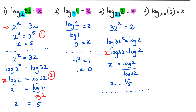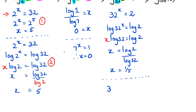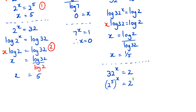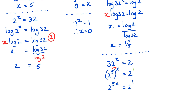Here's how to get 1/5 the other way. We have 32^x = 2. Rewrite 32 as 2^5, so (2^5)^x = 2. The right-hand side has 2 to the power of 1. Multiplying the exponents on the left gives 2^(5x) = 2^1. The bases cancel, so 5x = 1, therefore x = 1/5.